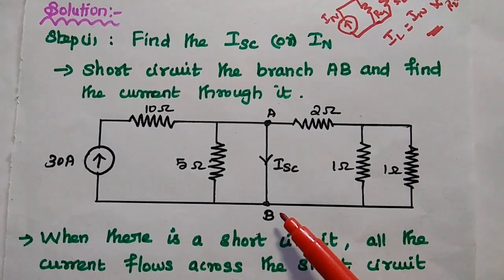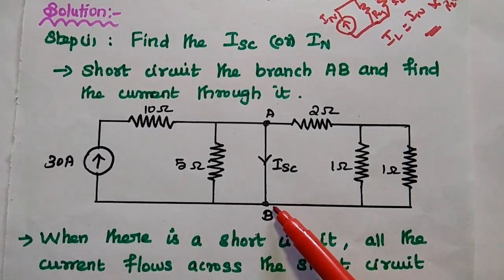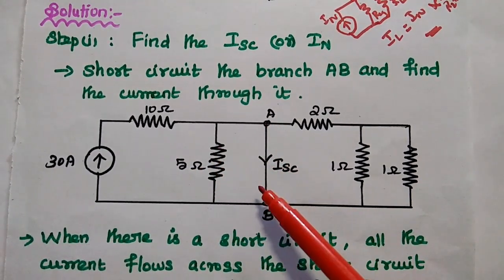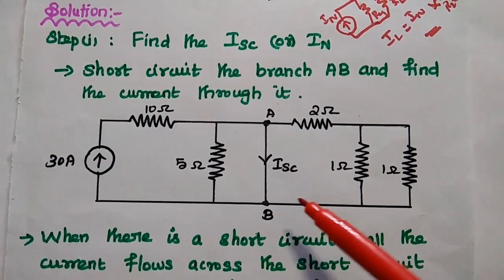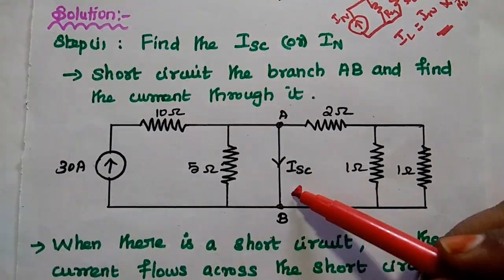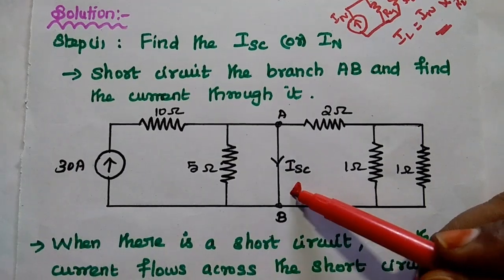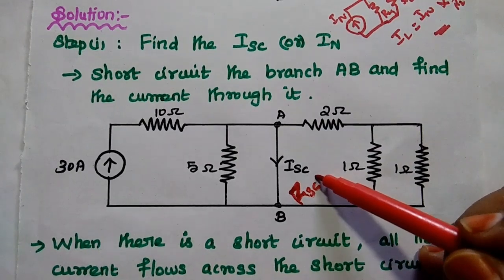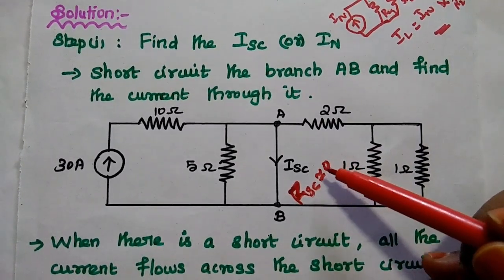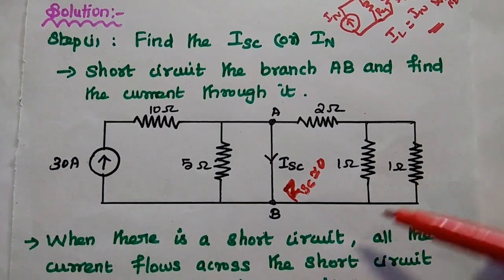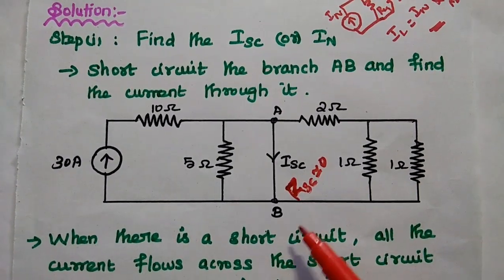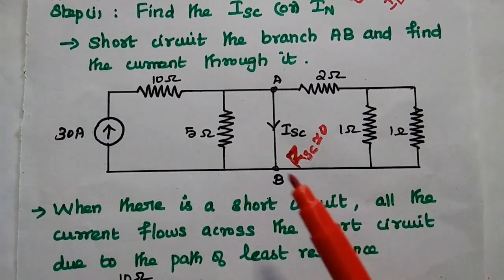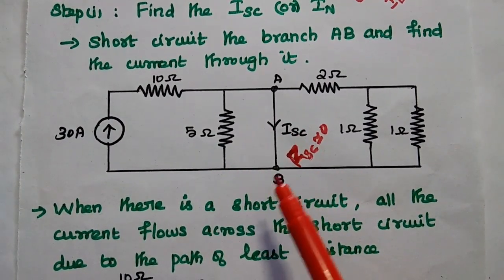As we all know, when the branch is short circuited in any electronic circuit, the entire current flows through that particular path, because the short circuit path has the least resistance value. The resistance for this short circuited path is approximately equal to zero, so the current prefers to flow through the low resistance path. When there is a short circuit, the entire current flows through that path.